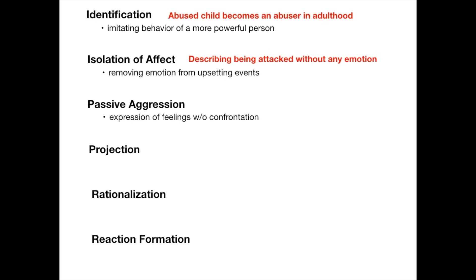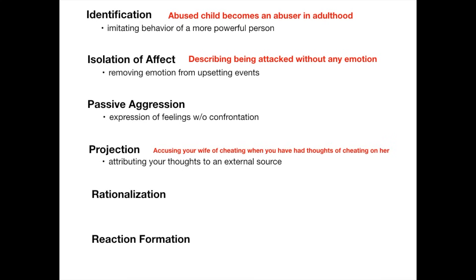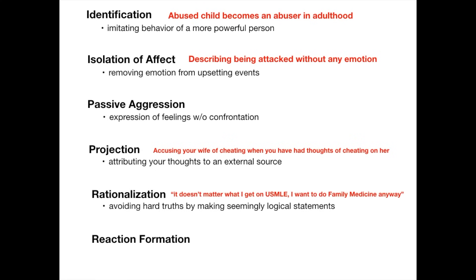Projection is when you attribute your own thoughts to an external source that doesn't have those thoughts. The classic example: you accuse your wife of cheating when she never has, but you yourself have had thoughts of cheating. You're projecting your own thoughts onto someone else. Rationalization is avoiding hard truths by making logical statements — like someone who gets a bad USMLE score and says, 'It doesn't really matter because I want to do family medicine anyway.' That's avoiding a hard truth by being logical.